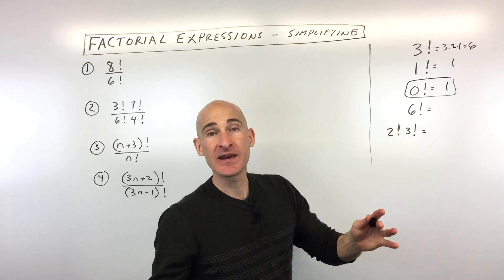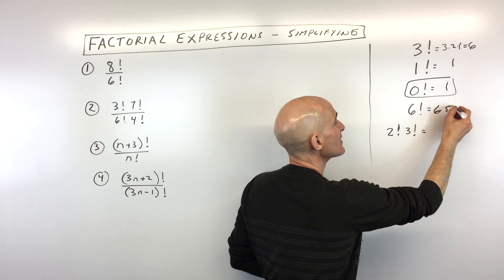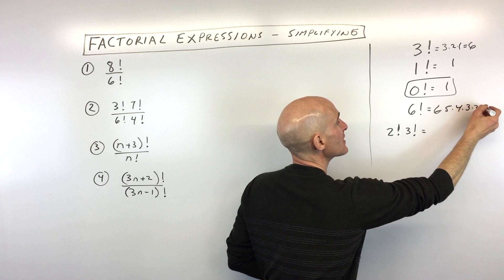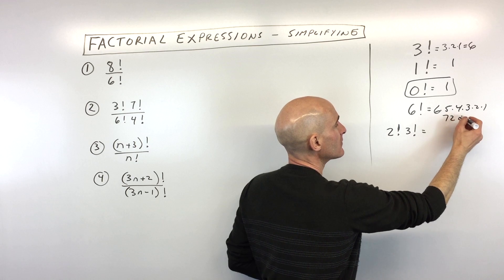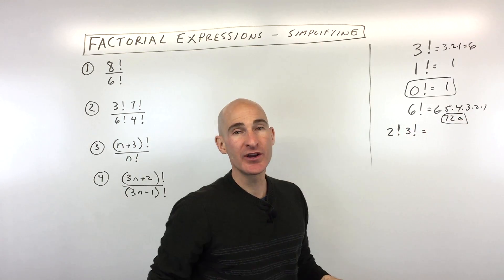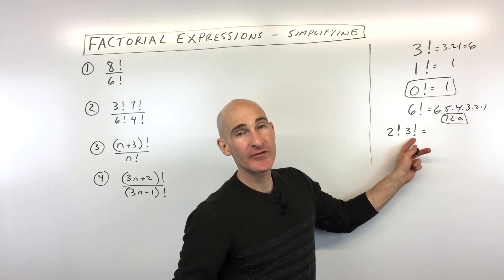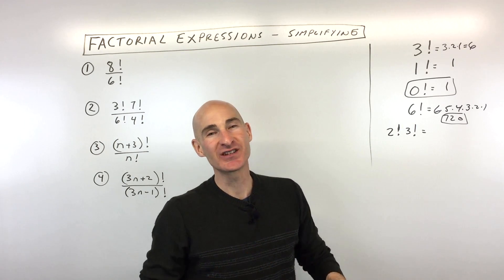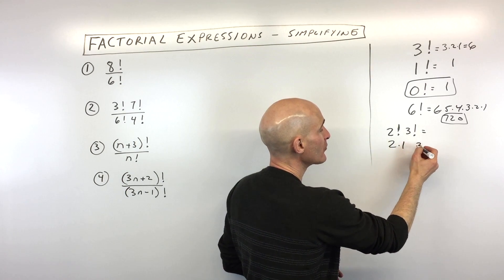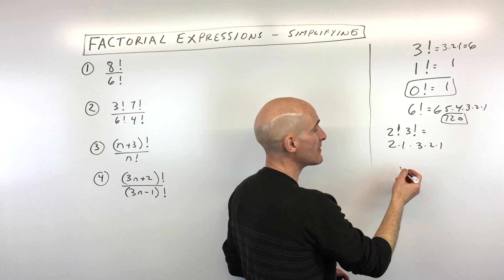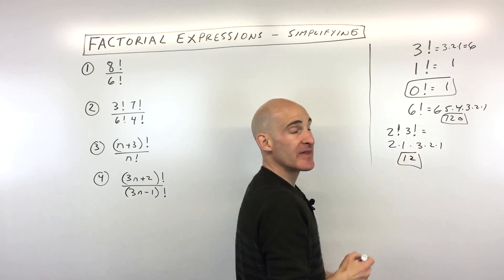And then six factorial — same thing, you would start at six and multiply down to one. So this would be six times five times four times three times two times one, which comes out to 720. And then the last one here — this is a common mistake I want you to avoid. Two factorial times three factorial does not equal six factorial. You have to simplify these individually. Two factorial is two times one; three factorial is three times two times one. So this is going to be 12.